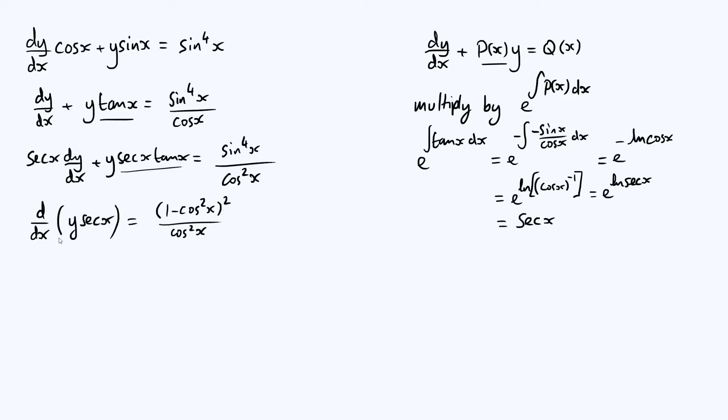Now we want to integrate both sides with respect to x to undo this derivative on the left side. And so if we do that, we are going to end up with y sec x is the integral of all of this stuff here. Let's actually just expand those brackets. The first term is just going to be 1. Then we're going to get a minus 2 cos squared x. And then we're going to get a plus cos to the 4x. And then we're going to divide that whole thing by cos squared.